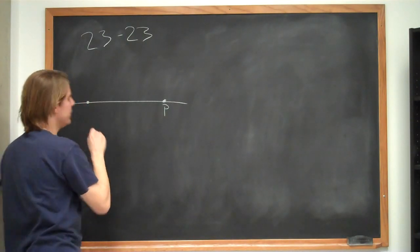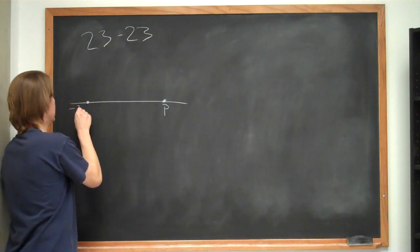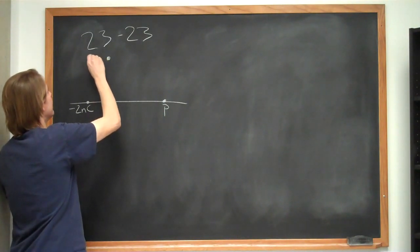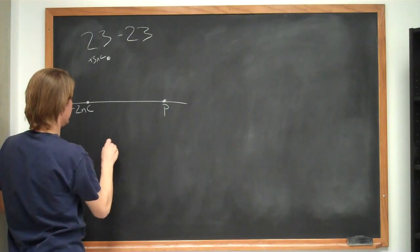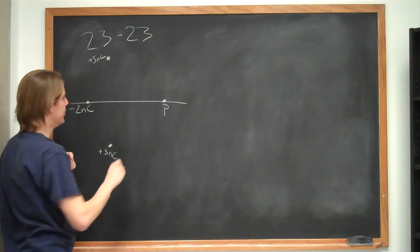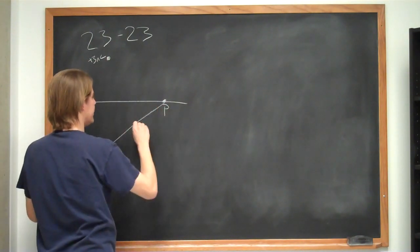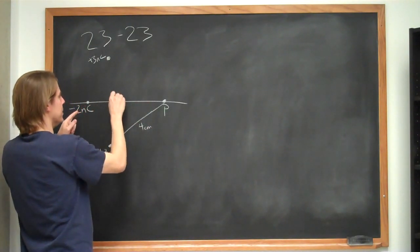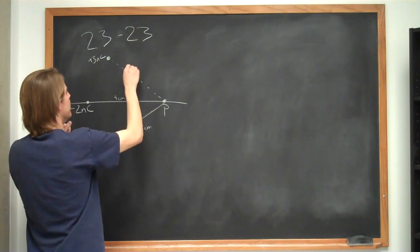We want to know the field at point P due to three charges. One charge is here on the axis with a charge of minus 2 nanocoulombs. One charge is up here at plus 3 nanocoulombs. And then the other charge is down here at also plus 3 nanocoulombs. And they tell us that these are on the arc of a circle and that this separation is 4 centimeters. So therefore we also know that this separation is 4 centimeters and this one is also 4 centimeters.